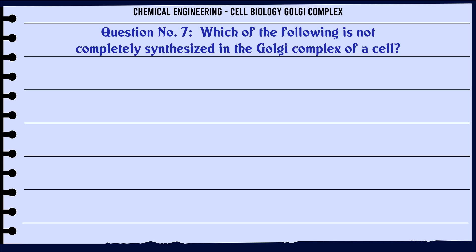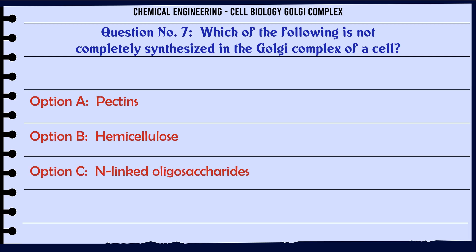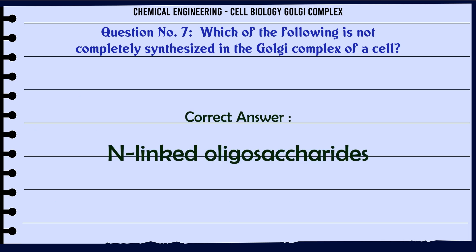Which of the following is not completely synthesized in the Golgi complex of a cell? A) pectins, B) hemicellulose, C) N-linked oligosaccharides, D) O-linked oligosaccharides. The correct answer is N-linked oligosaccharides.